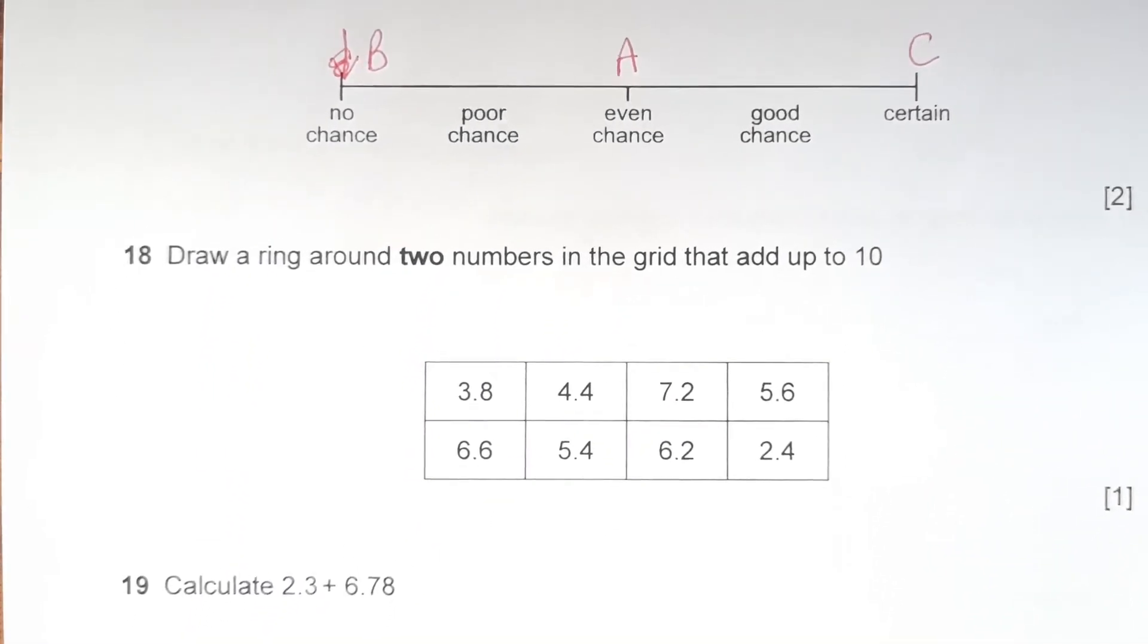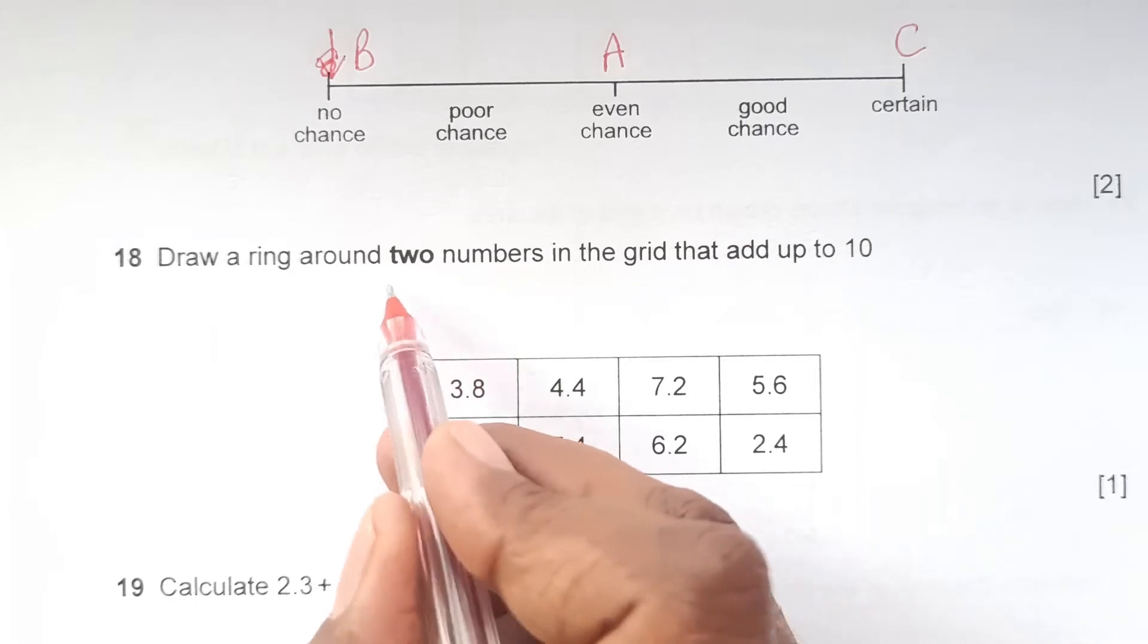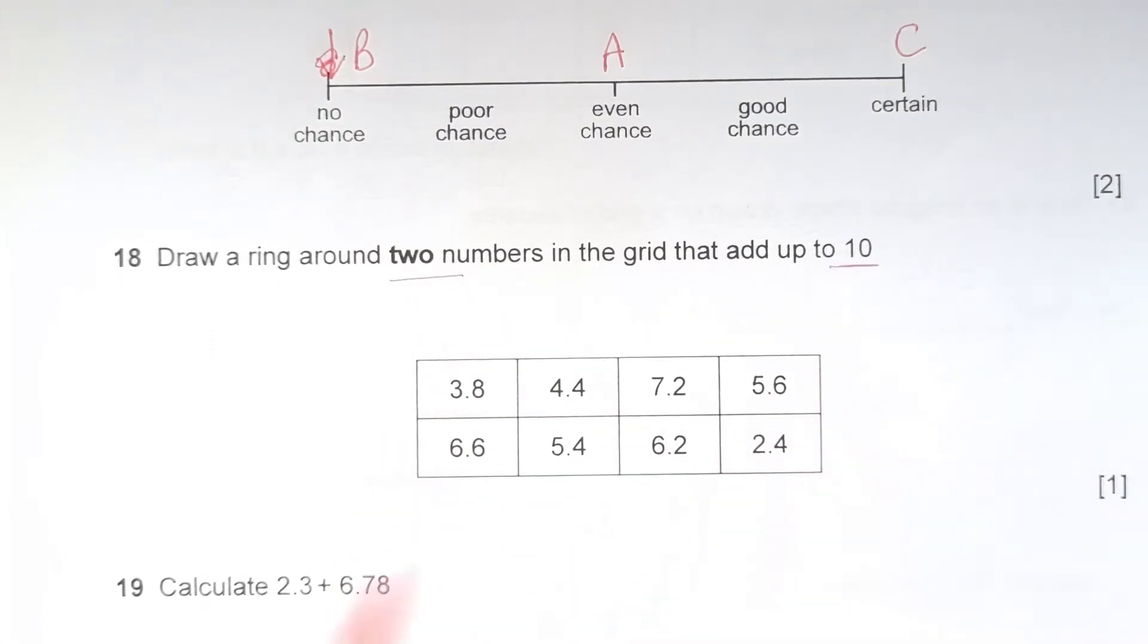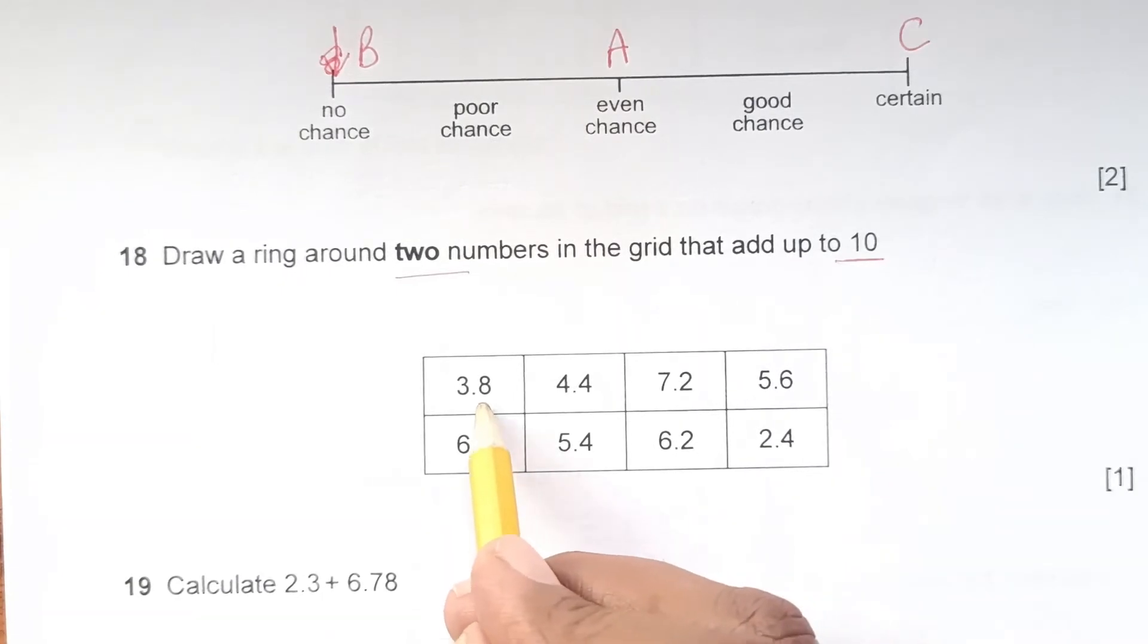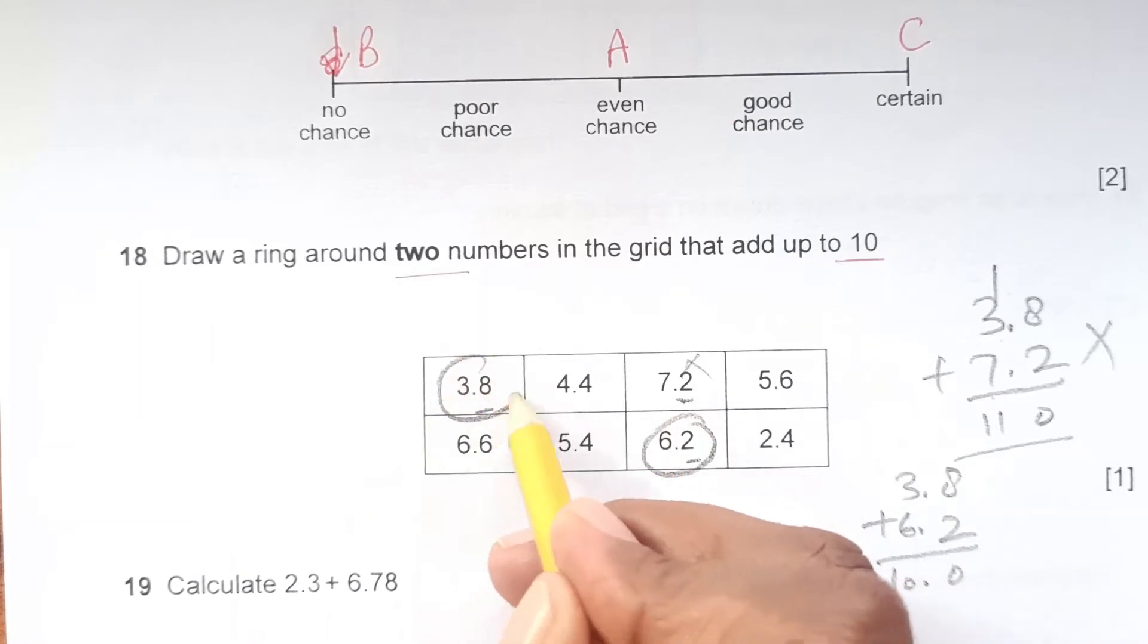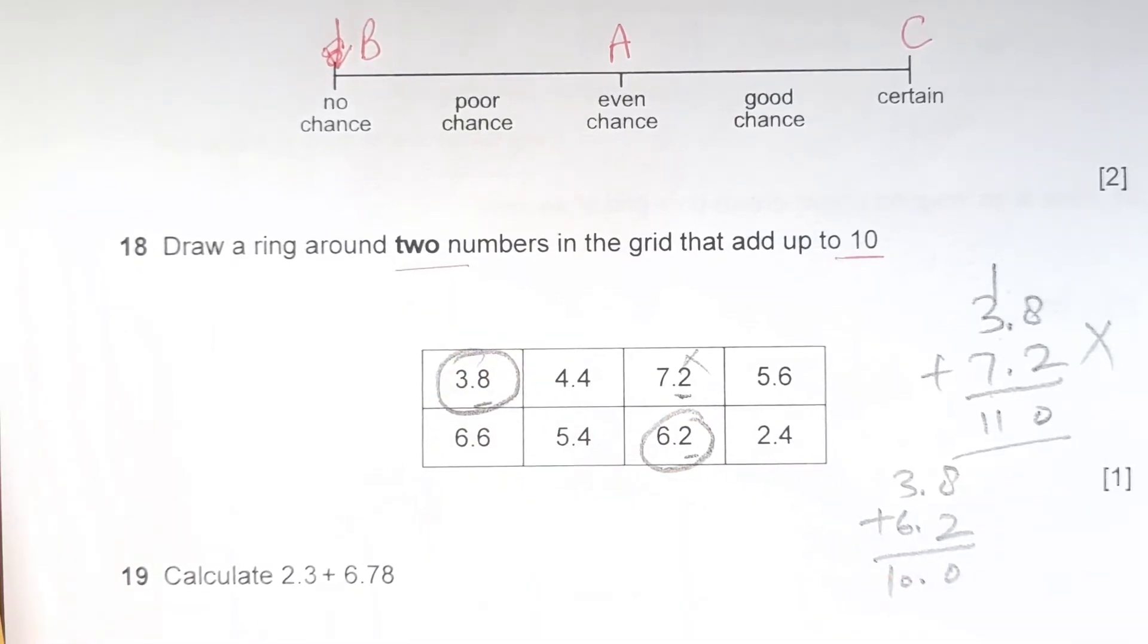Number 18. Draw a ring around two numbers in the grid that add up to 10. We are looking for numbers that add up to 10. If we choose the first one, it is 3.8. So 3.8 plus something equals 10. Let's see another one: 3.8 plus 7.2 - 8 plus 2 is 10, 7 plus 3 is 10, so it's 11. This cannot be our number. We are left with only this one. That means 3.8 plus 6.2. 8 plus 2 is 10, so you will have this and this as your answer.